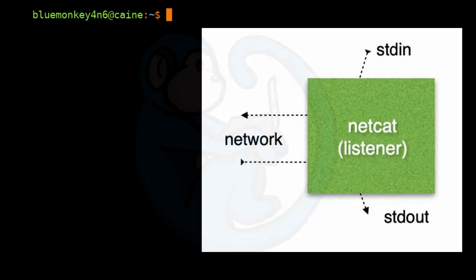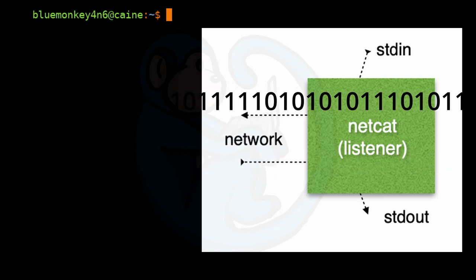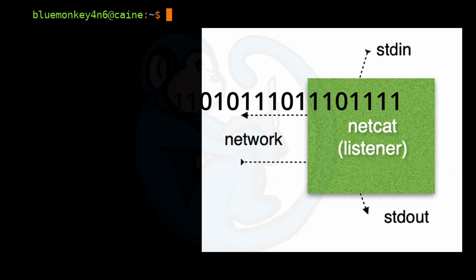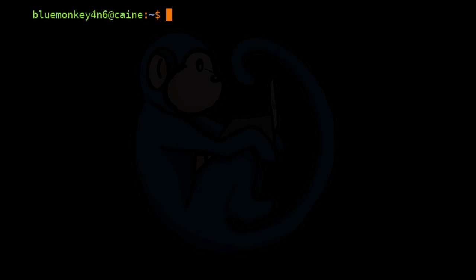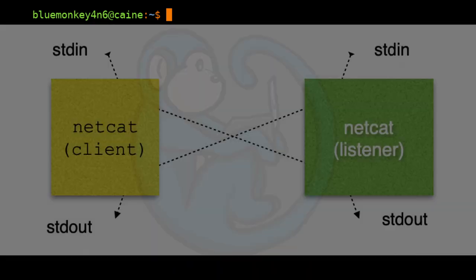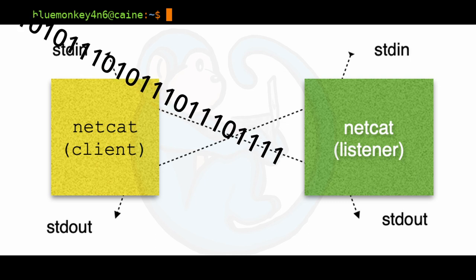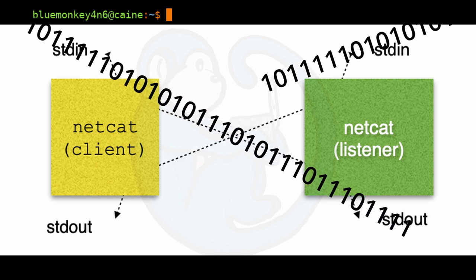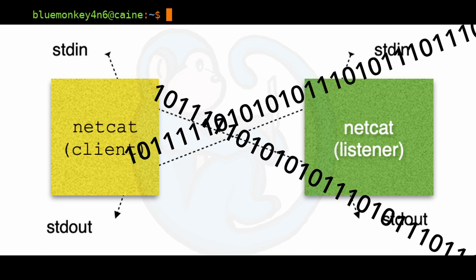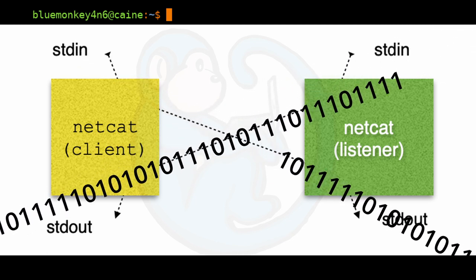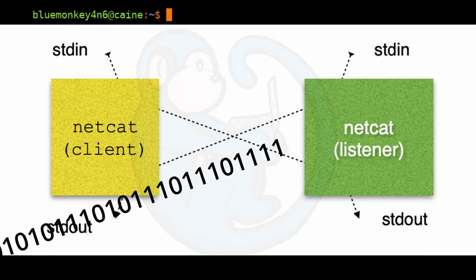On the listener side, a connection is made to a specific port and data from the client will be sent to standard output. Data from standard input is sent across the network to the client. Errors from netcat are sent to standard error. Pairing up a client and a listener allows them to communicate via the network — anything at standard in on one side appears as standard out on the other end, and vice versa.